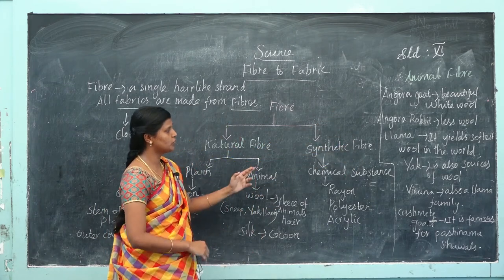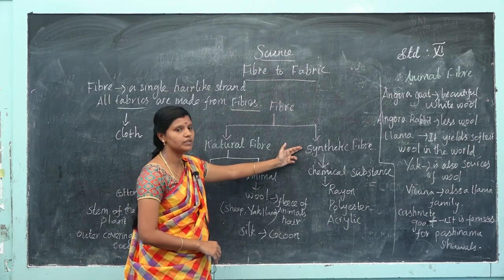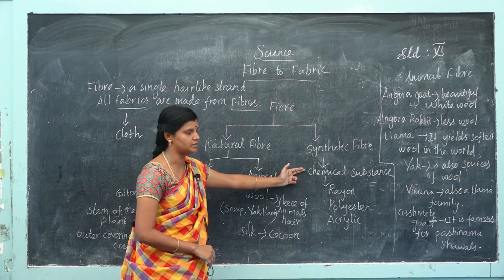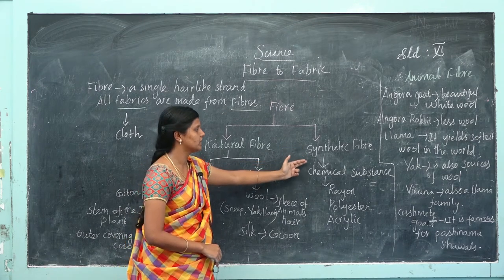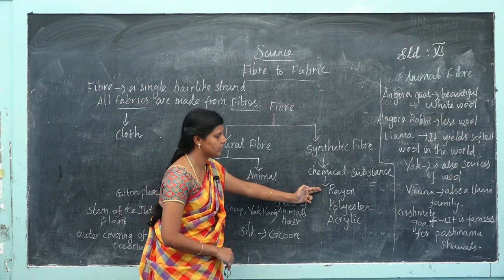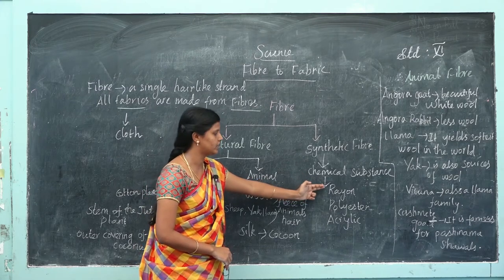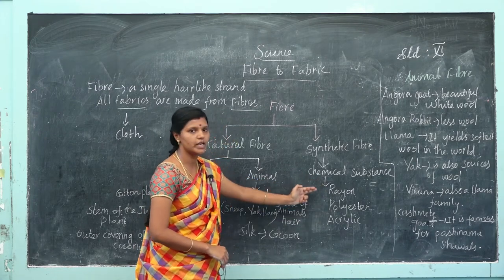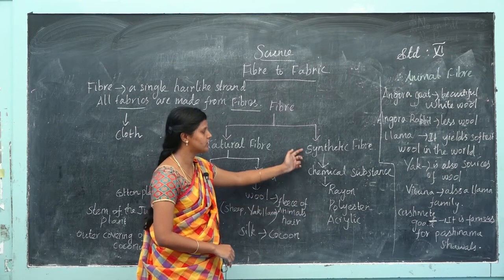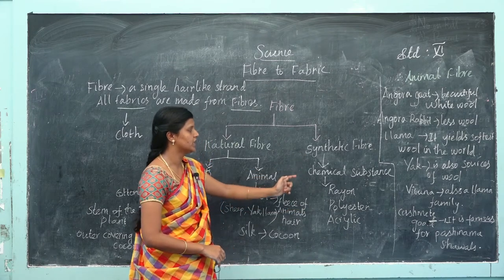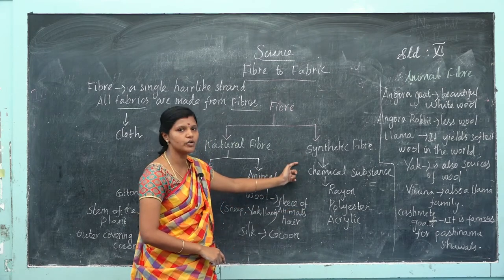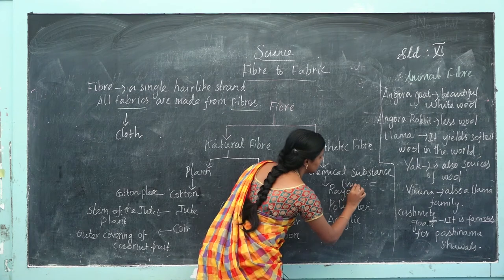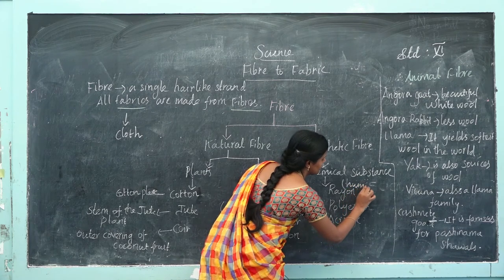Next we move to synthetic fiber. Synthetic fiber is obtained from chemical substances. The examples of synthetic fiber are rayon, polyester, and acrylic. Synthetic fiber is also called human-made fiber.